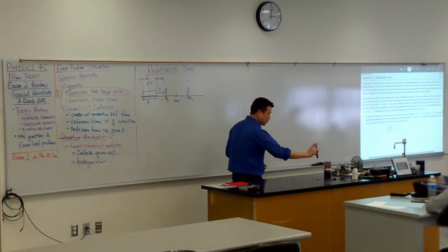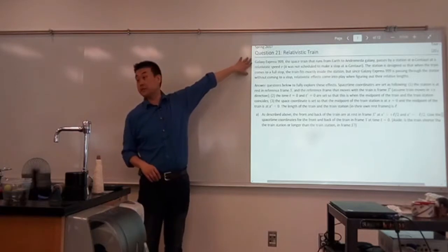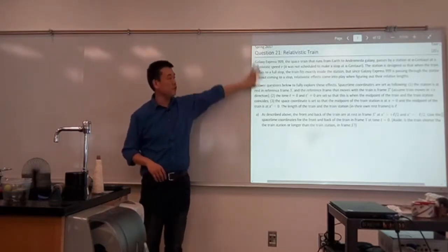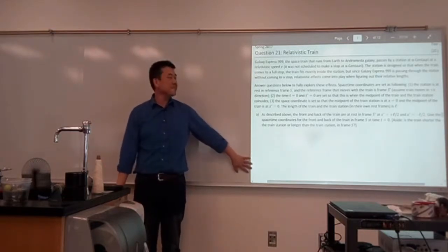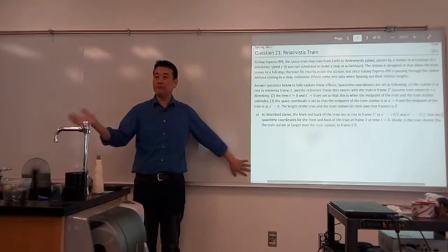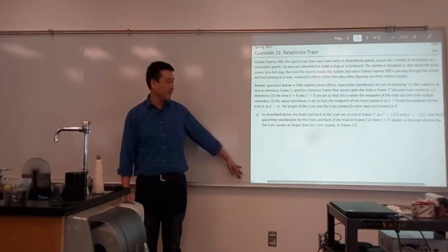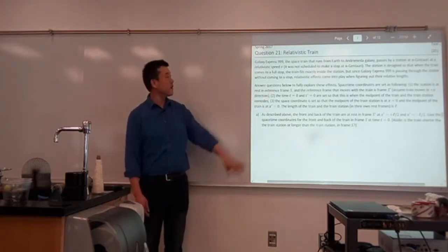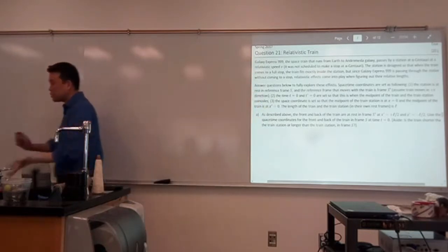Welcome back. The first question I thought we would go over is this question on the post-sample exam. It's a good overview of relativistic kinematics, and some things that relate to relativity paradoxes. If you get confused, that's a good indication that there's something for you to review here. So let's go through this. This long setup is describing essentially this scenario.